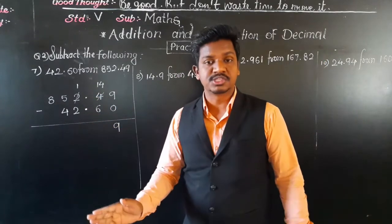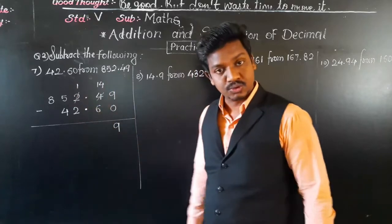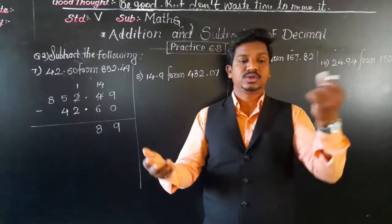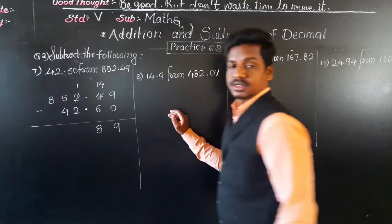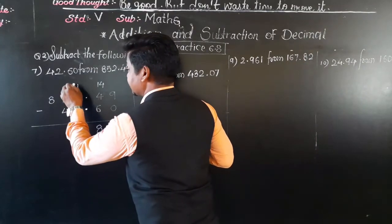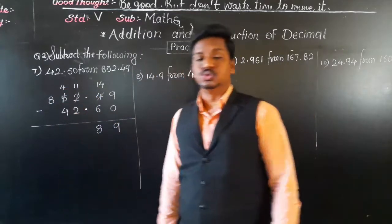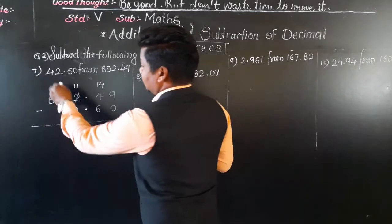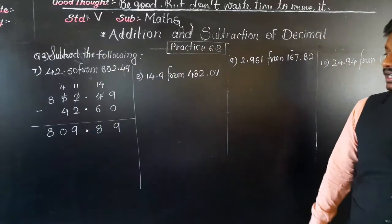Continuing: 1 minus 2 is not possible because 1 is smaller. So from the 5 we take 1 borrow: 5 remains 4 and 1 becomes 11. Then 11 minus 2 is 9. Write the decimal point. Then 4 minus 4 is 0, and 8 as it is. So the answer is 809.89.